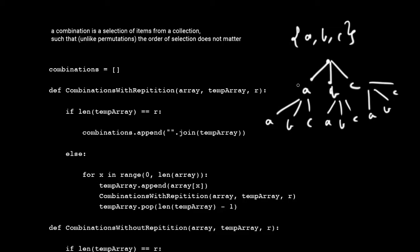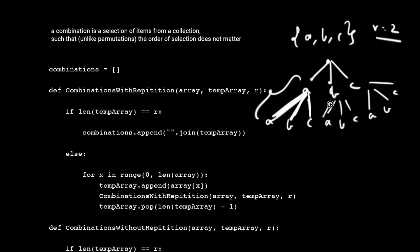It calls itself on every single element that you append. And what happens is, let's say your R equals 2 — once you reach a length of 2, your length is satisfied, so you don't need to go any further. Then it basically starts generating the combination. So you have A-A, A-B, A-C, B-A, B-B, B-C, and then it makes a list of all those combinations.